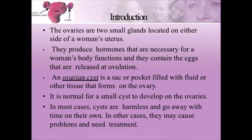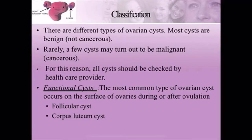An ovarian cyst is a sack or pocket filled with fluid or other tissue that forms on the ovaries. It is normal for a small cyst to develop on the ovaries. In most cases, cysts are harmless and go away with time on their own. But in some cases, treatment is needed when it causes problems.